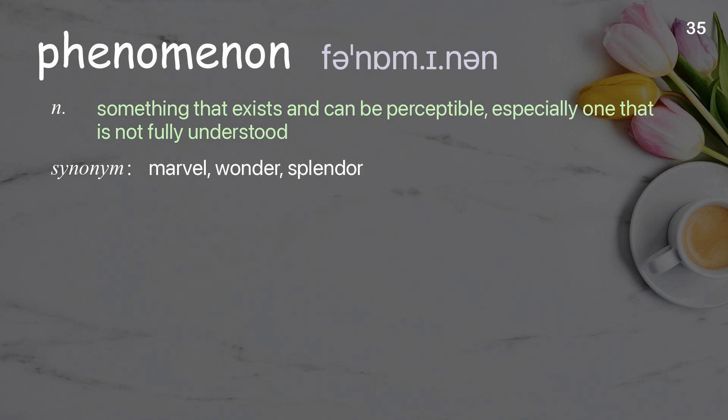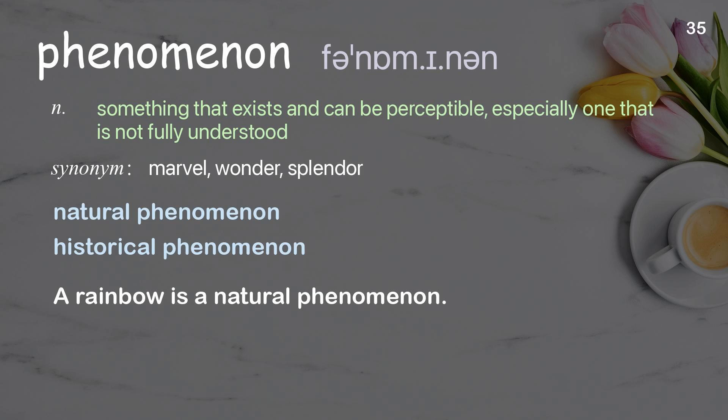Phenomenon. Something that exists and can be perceived, especially one that is not fully understood. Examples: natural phenomenon; historical phenomenon. A rainbow is a natural phenomenon.